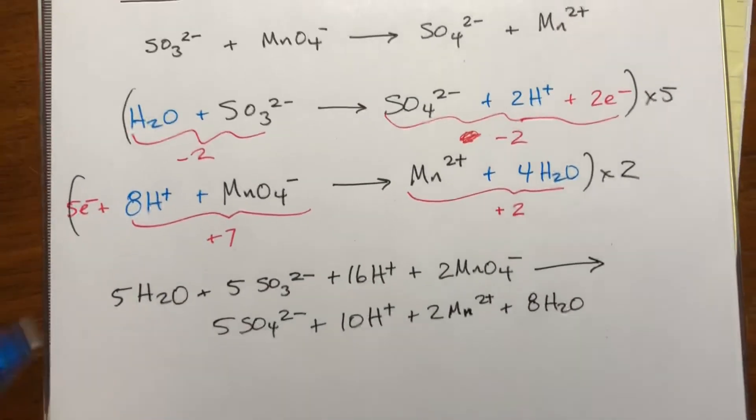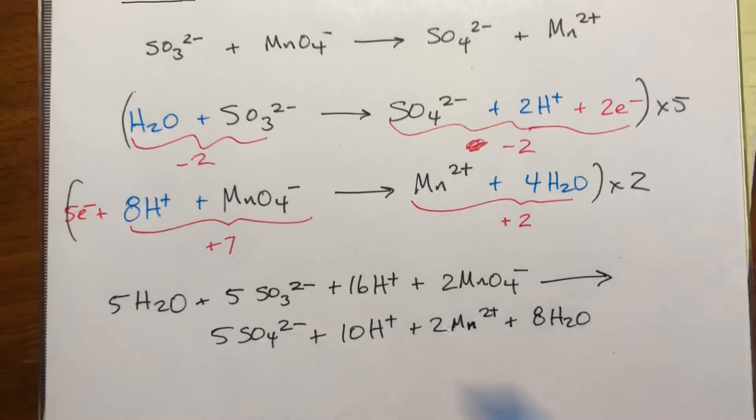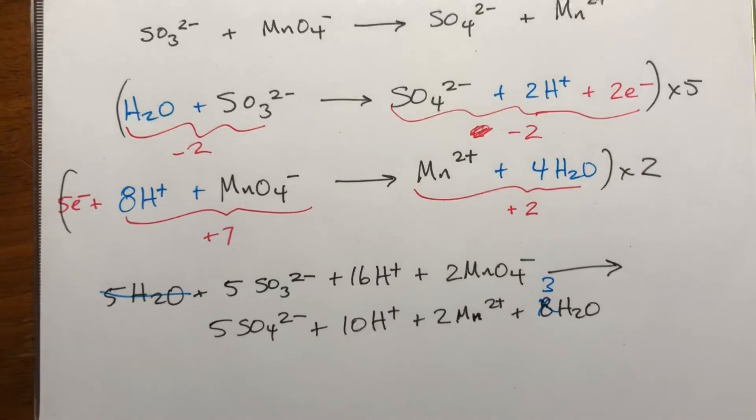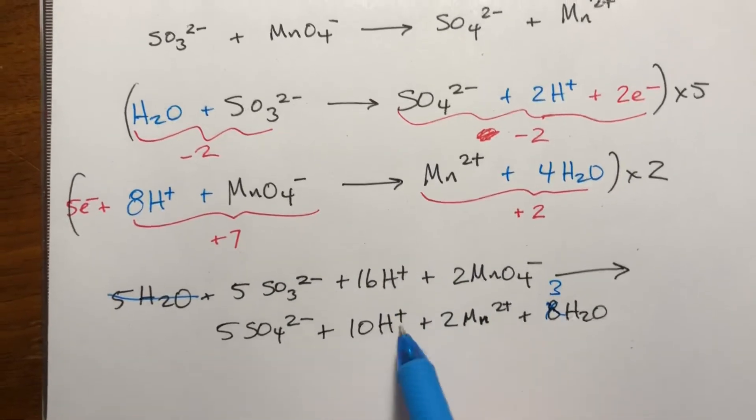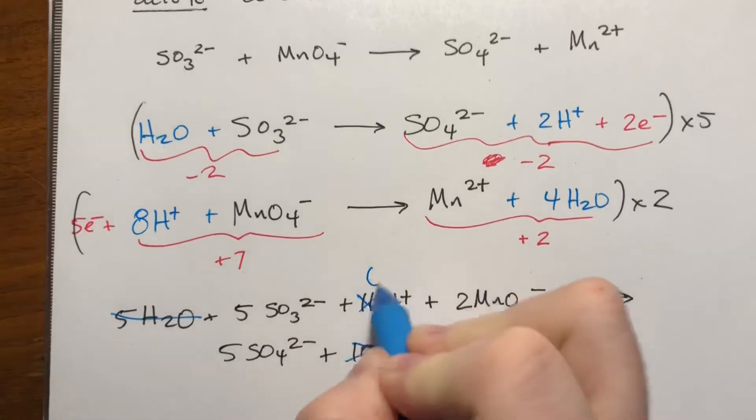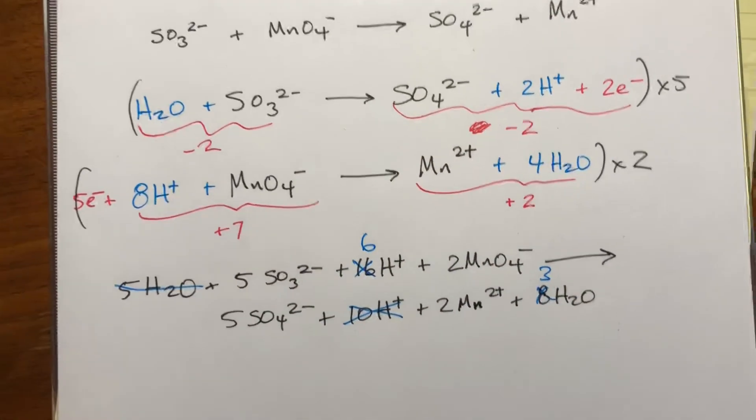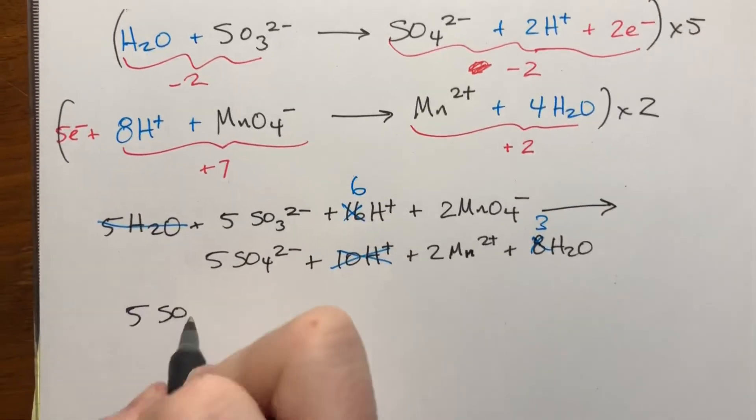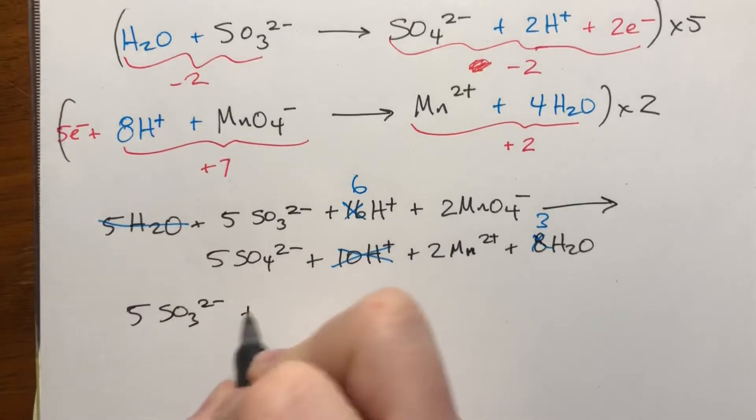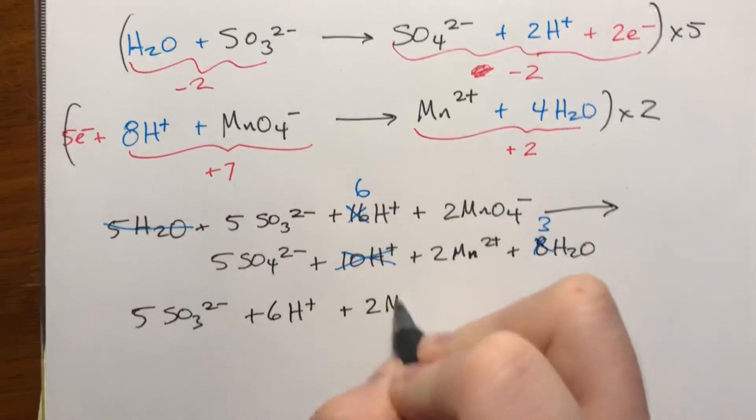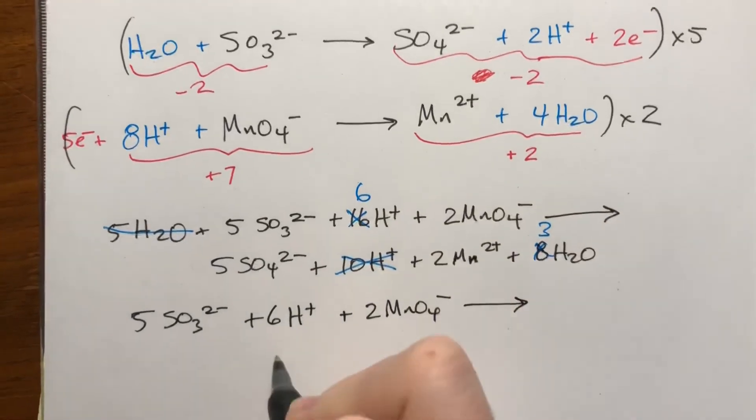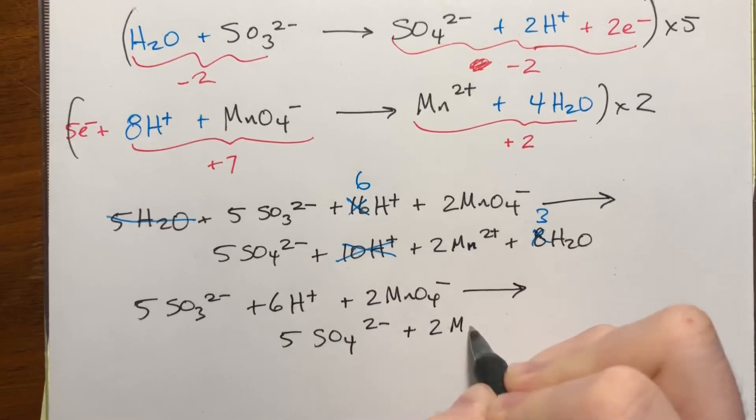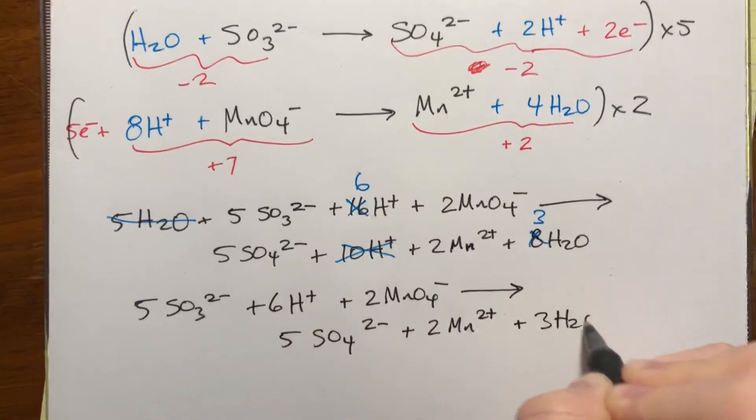Okay, now we're gonna cross out anything that we can, anything that's the same on both sides. We have five waters here and eight waters here, so these will all be gone, and this will now be three. We remove five from both sides. We have sixteen H pluses and ten H pluses here. This will all cancel out and this will become six. I'm going to rewrite everything just to make it look clean, but we should be done. So five SO3 2- plus six H+ plus two MnO4- forms five SO4 2- plus two Mn2+ plus three waters.